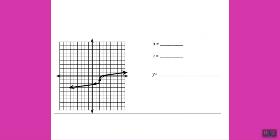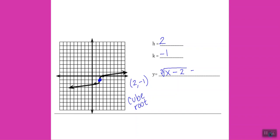In this example, we're given the graph and we write the equation. The h-k point is at the center of the curve — the bottom of the V or U, or the endpoint for a square root. Here that point is (2, −1), so h equals 2 and k equals negative 1. Based on the shape, this is a cube root function. Inside the cube root I write x minus 2 (the opposite of h), and then k goes on the end, so minus 1. The equation is the cube root of (x − 2), minus 1.